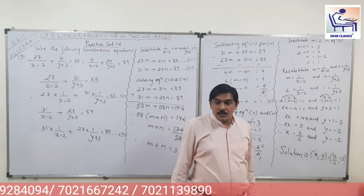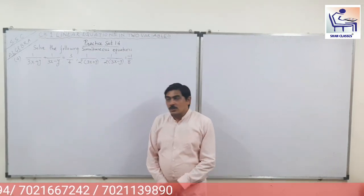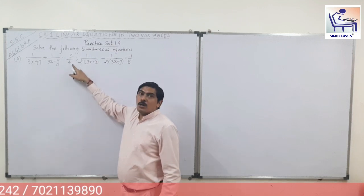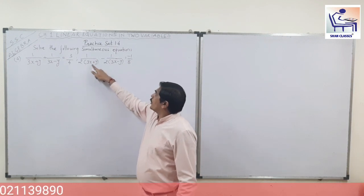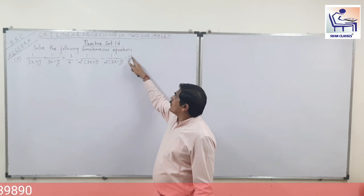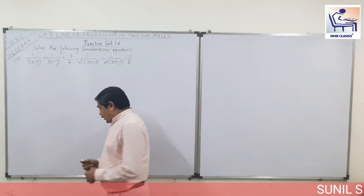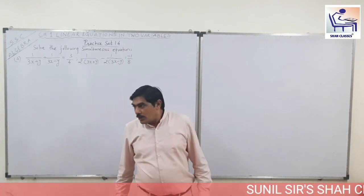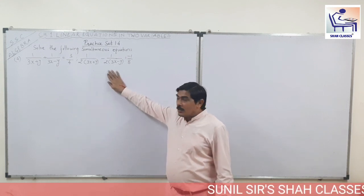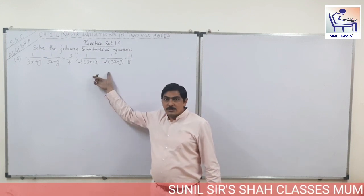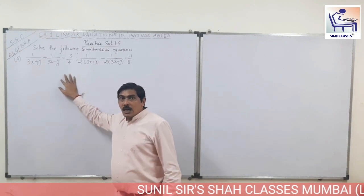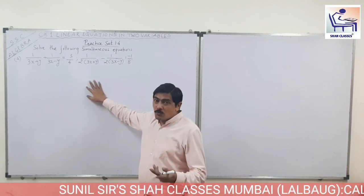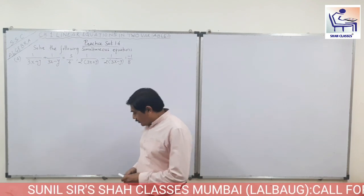Now let's start the fourth sum. The fourth sum is: 1 upon (3x plus y) plus 1 upon (3x minus y) is equal to 3 upon 4 — this is your first equation. The second equation is 1 upon 2(3x plus y) minus 1 upon 2(3x minus y) is equal to minus 1 upon 8. This sum is quite tough as it is the last sum of this exercise. I advise you to do all 3 sums and practice set 1.1 before attempting this 4th sum.